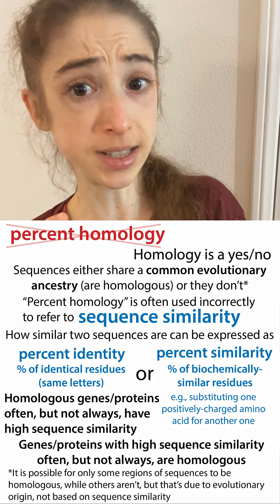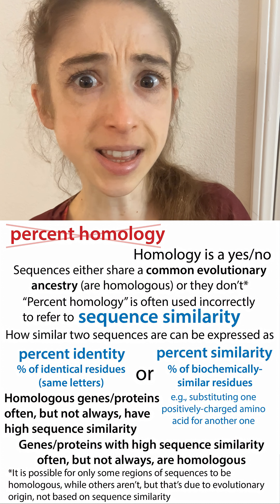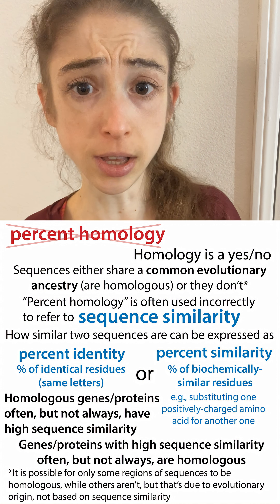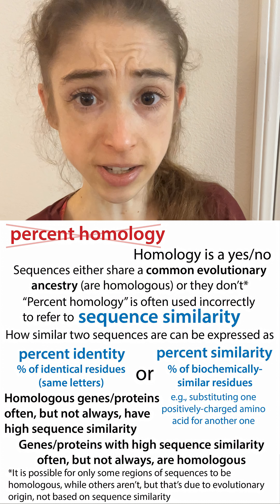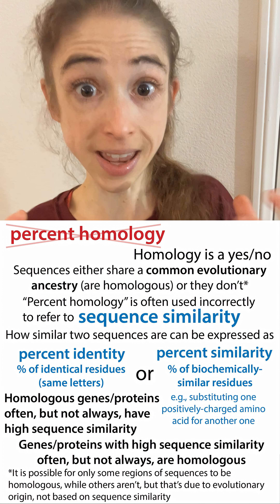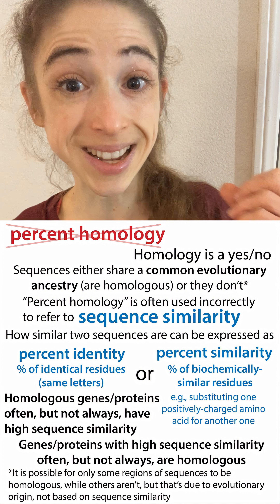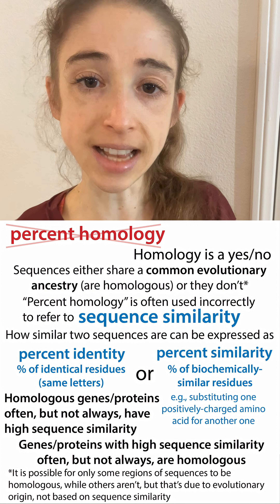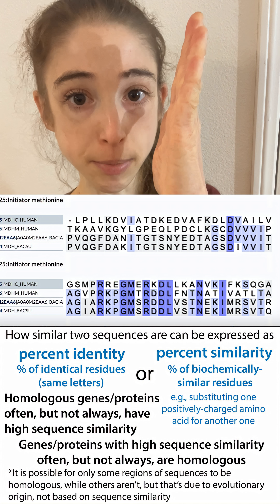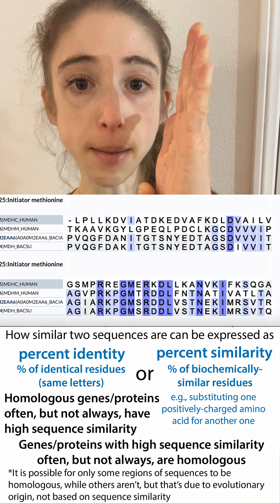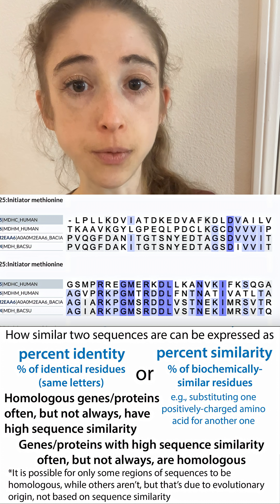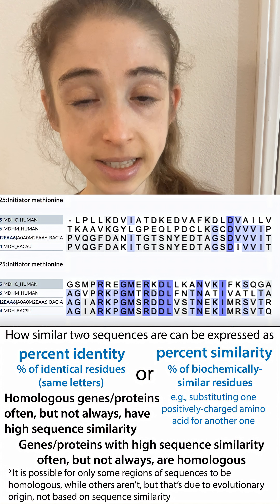When people talk about percent homology, they're typically really thinking about percent similarity. One method is percent identity: for each amino acid residue, is the residue the same in both sequences — is it identical? The number of identical amino acids divided by the total number of amino acids gives you the percent identity.